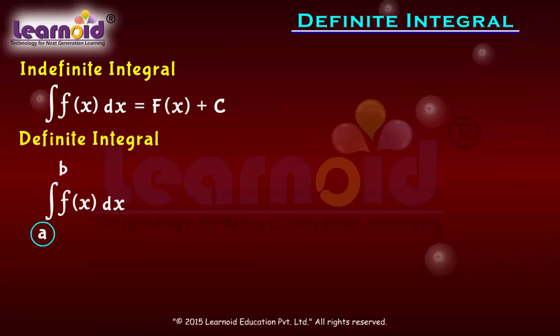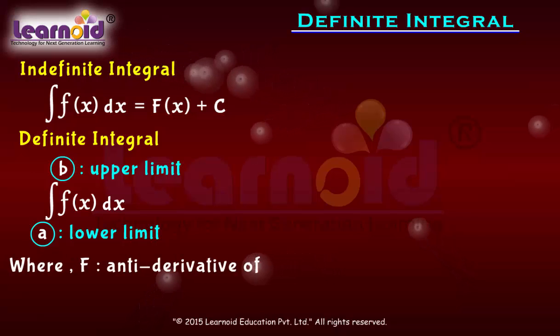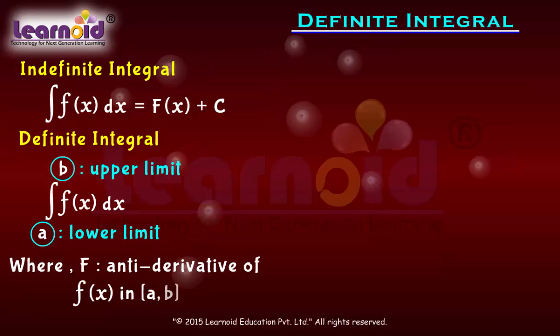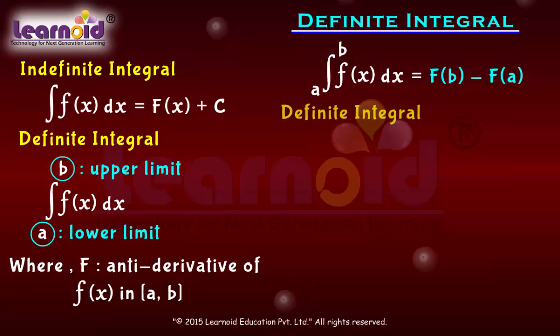where a is called the lower limit and b is called the upper limit. If function f(x) has an antiderivative F in the closed interval [a,b], then definite integral is just the difference of F at the points: F(b) minus F(a). Definite integral can also be expressed as the limit of a sum.